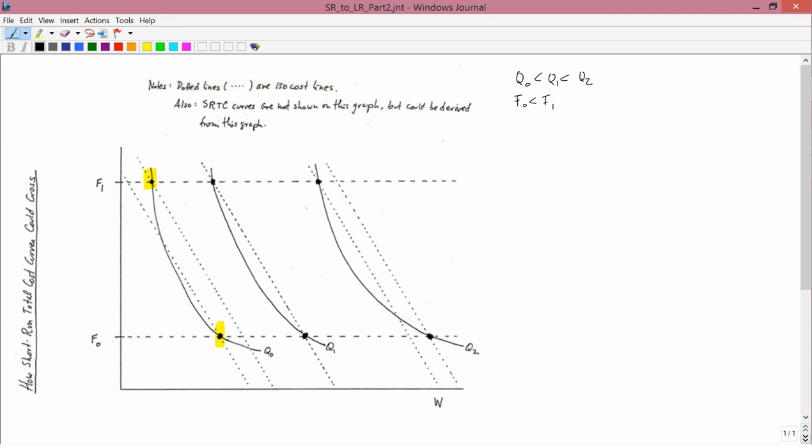So the relevant iso-cost lines are this one and this one. And you can see that the one corresponding to F0 gives a lower total cost than the one corresponding to F1.